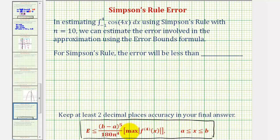To find this maximum function value on the closed interval, we have the option of either analyzing the fourth derivative function graphically, or finding the critical numbers on this closed interval, and then evaluating the function at the critical numbers as well as the endpoints, because we have a closed interval. So let's begin to set this up.